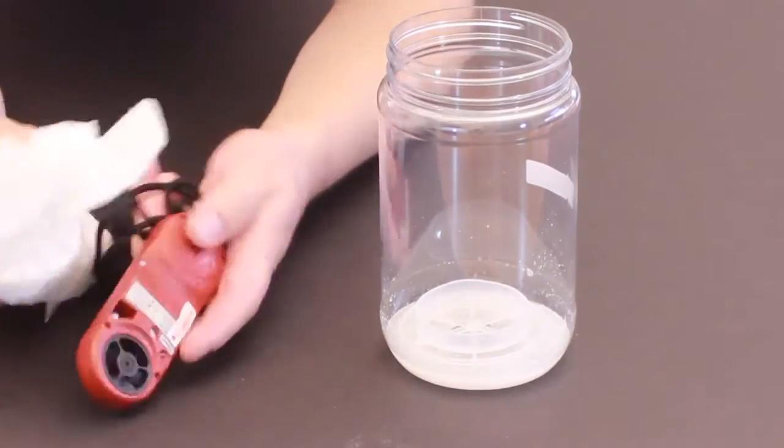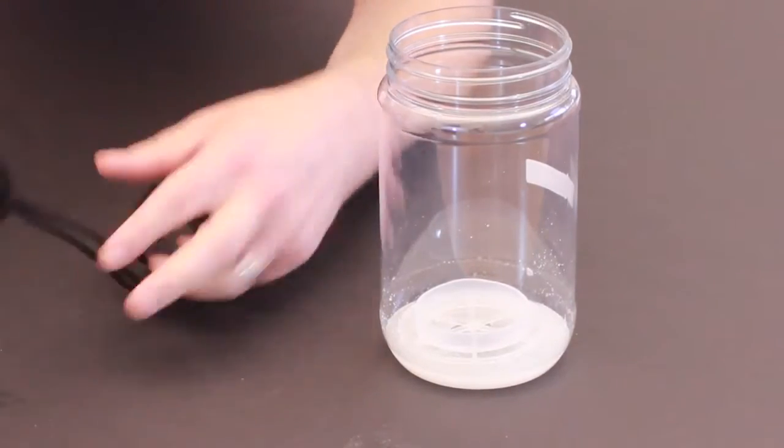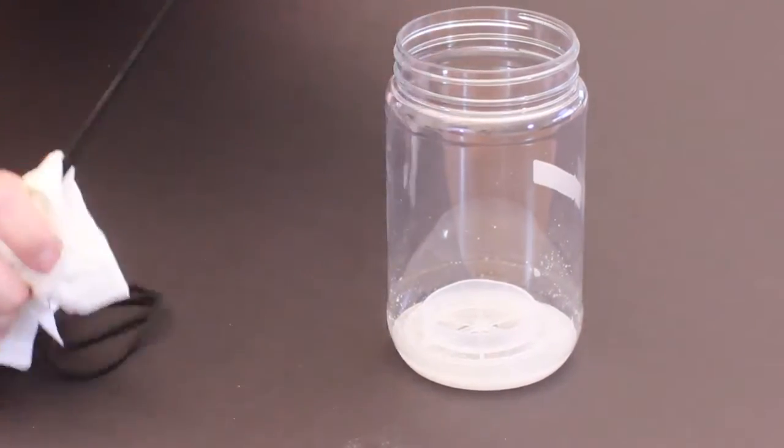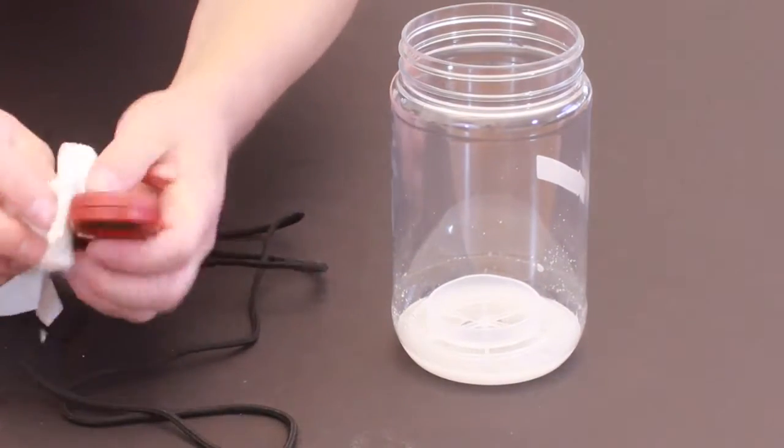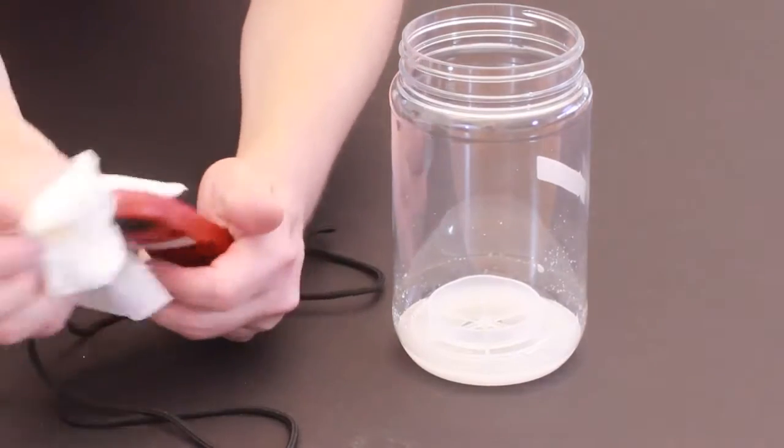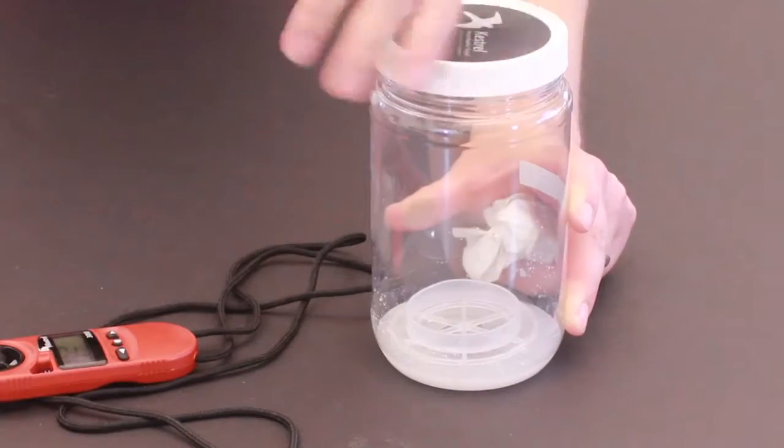It's very important that we wipe down any residual salt or liquid that would be on the Kestrel. Hopefully the spacer kept it from getting wet, but just to be sure, just take a paper towel and make sure that there's no excess salts on here. Now we can close the magnesium chloride chamber.